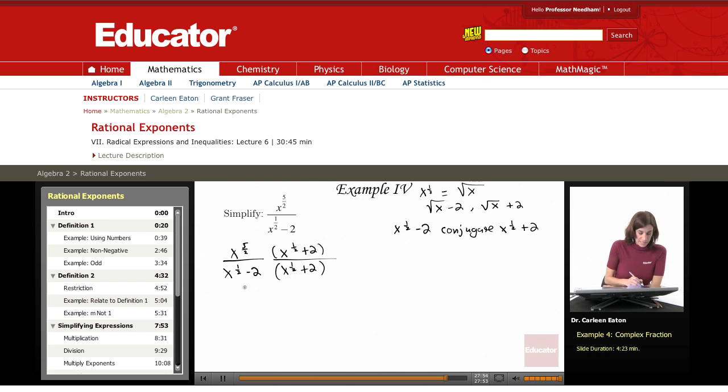Using the distributive property in the top, x to the 5 halves times this first term, x to the 1 half plus x to the 5 halves times 2.